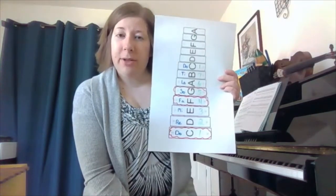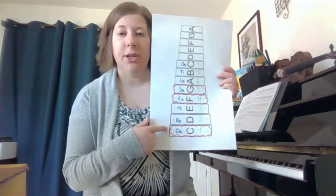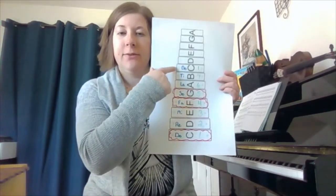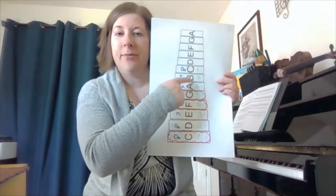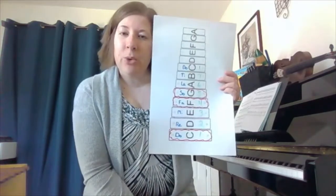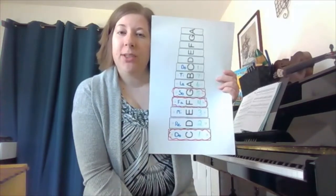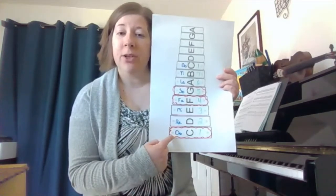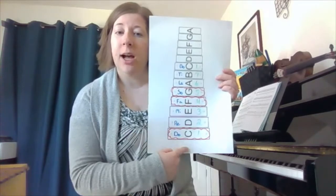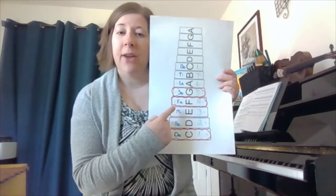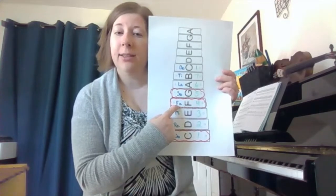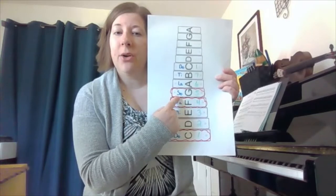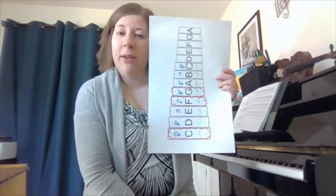Our chords are built on solfege. You can see I put our solfege on our xylophone here, as well as a set of numbers. When we name chords in music, we name them using numbers based on which solfege they start on. So if I have a chord starting on do, I'm going to call it a one chord. If I have a chord starting on fa, I'm going to call it a four chord. And if I have a chord starting on so, I'm going to call it a five chord.